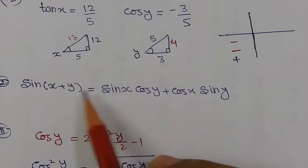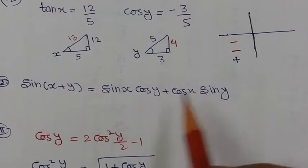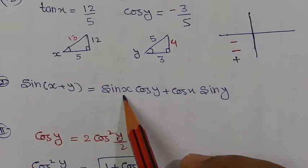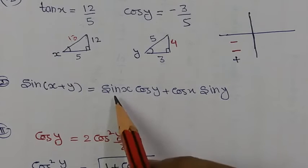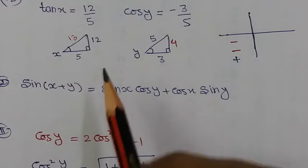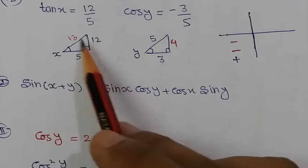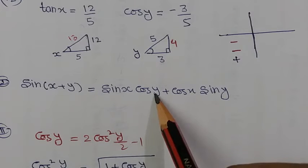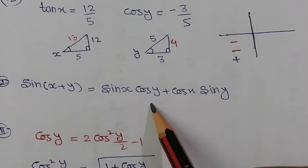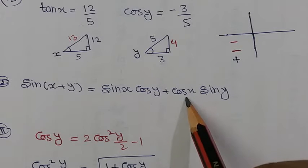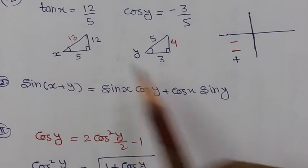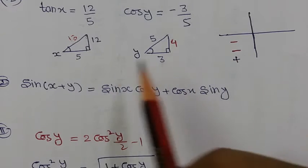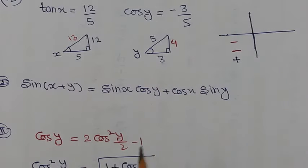We know that sin(x+y) equals sin x cos y plus cos x sin y. Since x and y are in the third quadrant, all values are negative. So sin x equals minus 12 upon 13, cos y equals minus 3 upon 5, cos x equals minus 5 upon 13, and sin y equals minus 4 upon 5. Substituting all these values gives the value of sin(x+y).